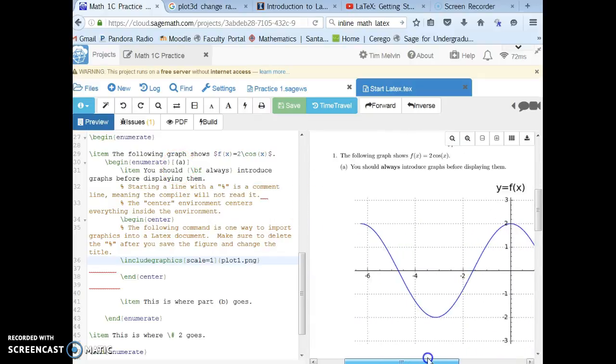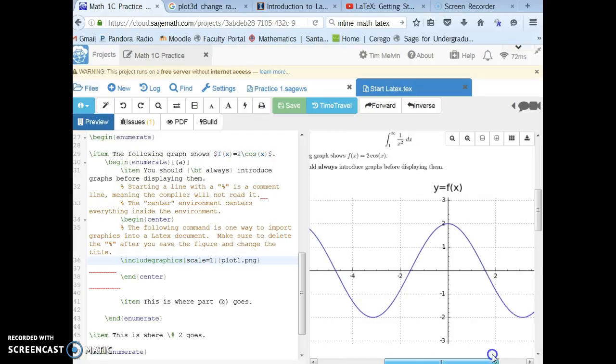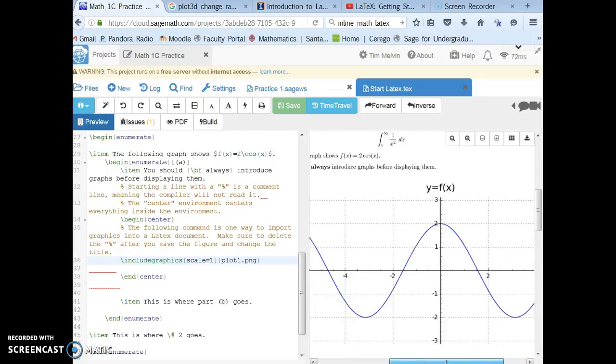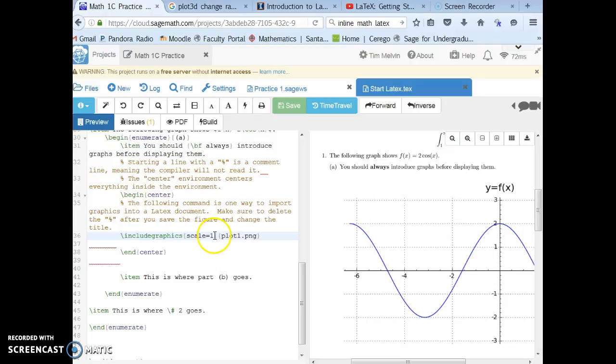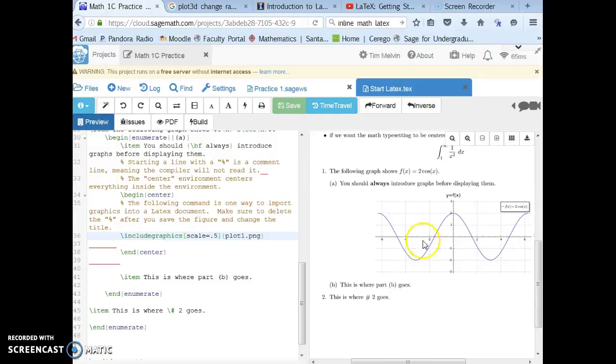And here we go, we've got our figure imported. Notice it's pretty big, it's falling off the page. So I included the option for scale, I could change that. Now scaling at a hundred percent, so if I wanted to make that half the size, that could be 0.5. Click on the preview again, and there we go.